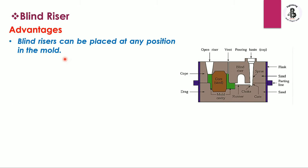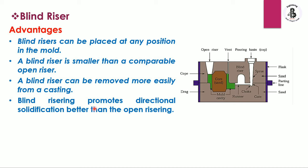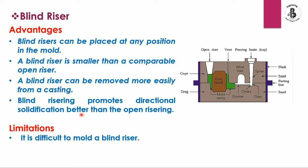Discussing the advantages: blind risers can be placed at any position in the mold — either in the cope, drag, or near the parting line. A blind riser is smaller than a comparable open riser, and blind risers can be removed more easily from a casting. Blind risering also promotes the directional solidification process better than an open risering system, so if you want to control the directional solidification process in the mold cavity, you should prefer blind risering over open risering.